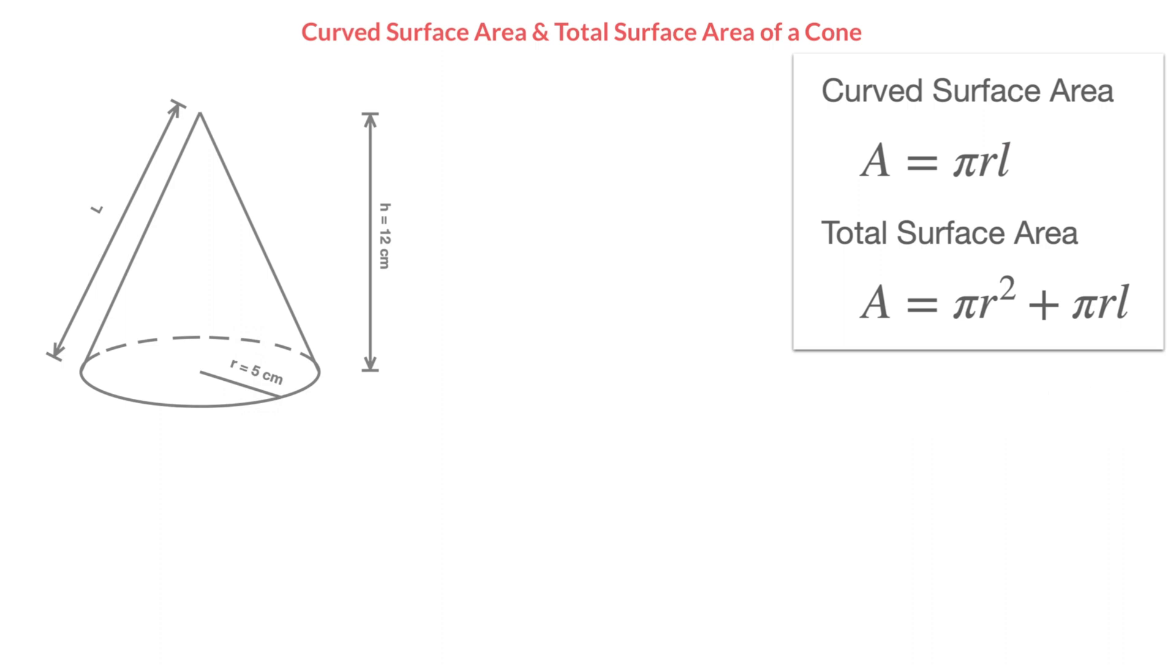So let me make a quick sketch of a cone here, something looking like this. There we go. As I was saying, r is the radius of the disc at the base of the cone. So that would be the radius I'm adding right now in blue. That's r.